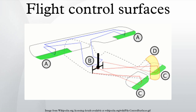Yaw changes the direction the aircraft's nose is pointing, left or right. The primary control of yaw is with the rudder.